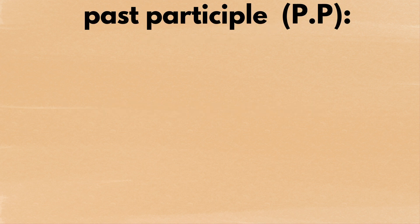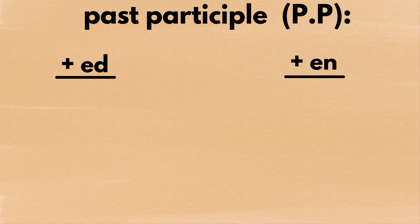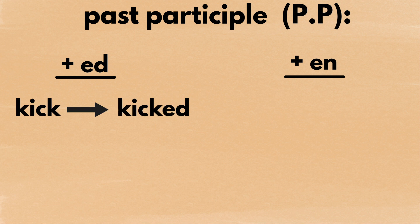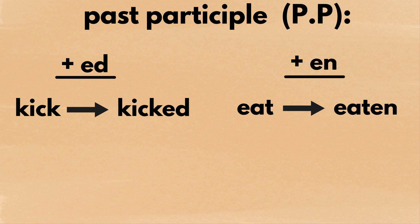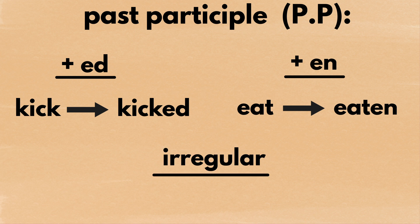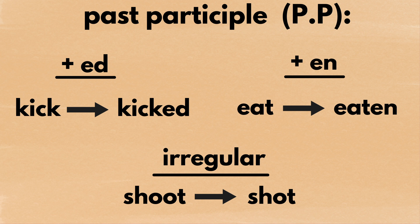And you have the sentence I am finishing my homework. Moving on, past participles, also known as pp, are the ones you usually make by adding ed or en after the verb, as in kick to kicked or eat to eaten. However, many past participles do not follow this rule, as in shoot to shot, so the only way to make sure is to check the dictionary.